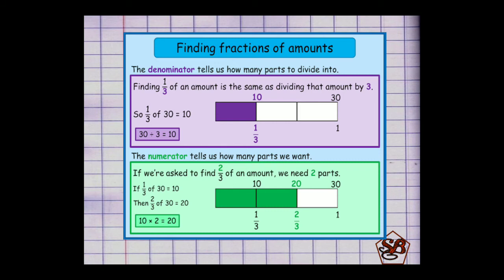But every time it is not possible for us to represent it in a picture form. In such case we do calculations. The denominator tells us how many parts to divide into. For example, finding 1/3 of an amount is the same as dividing that amount by 3. So here is an example: 1/3 of 30. That means 30 is to be divided into 3 equal parts.